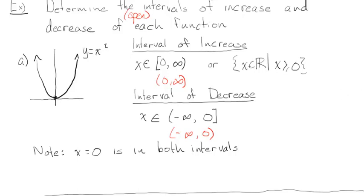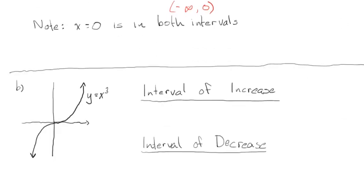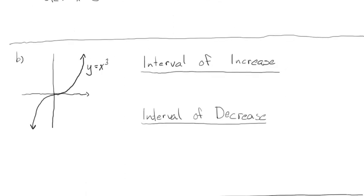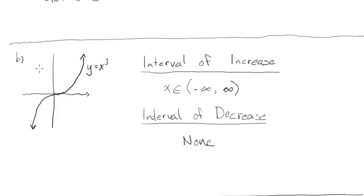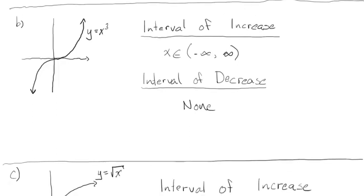The second example is a cubic function. Notice the y-values as you go from left to right are always increasing, so the interval of increase is all real numbers — (-∞, ∞). There is no interval of decrease; the y-values are never going down.